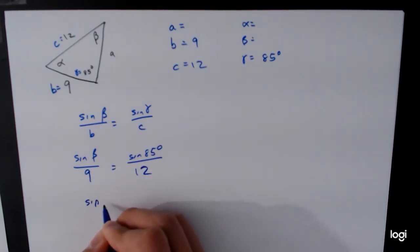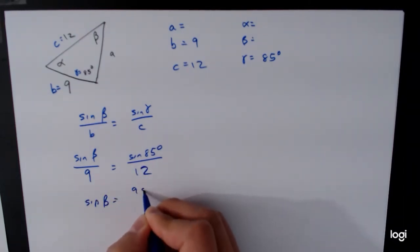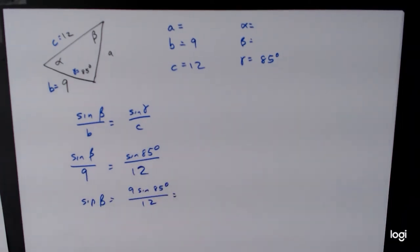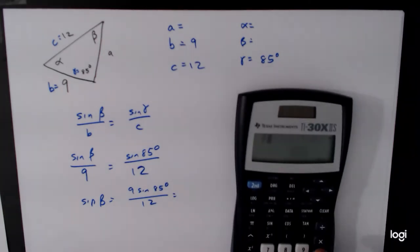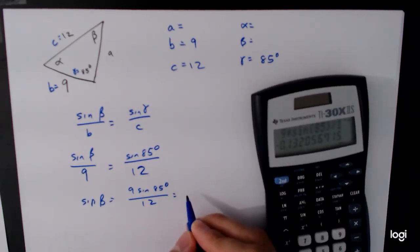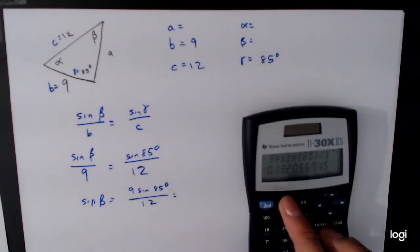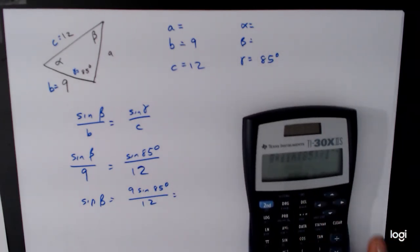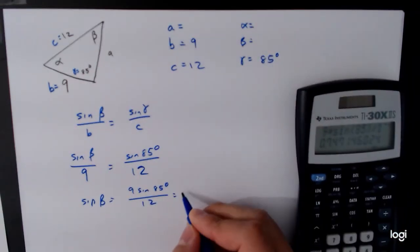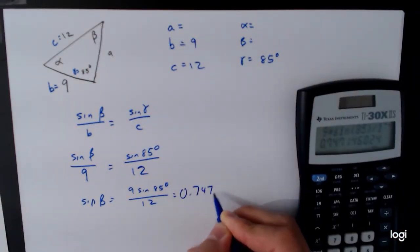When we solve this, sine of beta is 9 sine of 85 degrees over 12, and we're going to calculate what number this is, so 9 times sine of 85 divided by 12 is equal to, oh, I'm in radians, no wonder why that didn't work, degrees is equal to 0.7471.